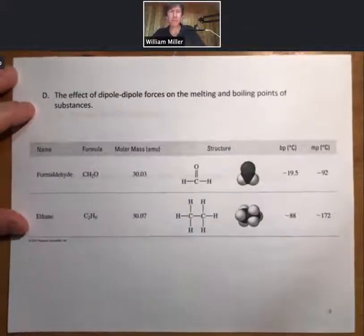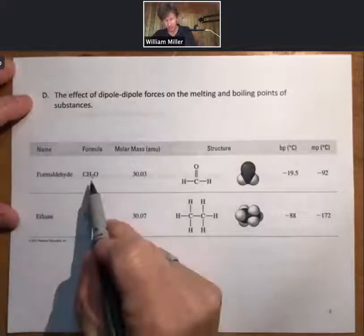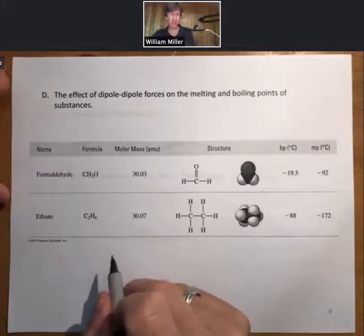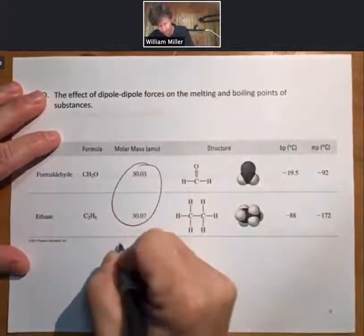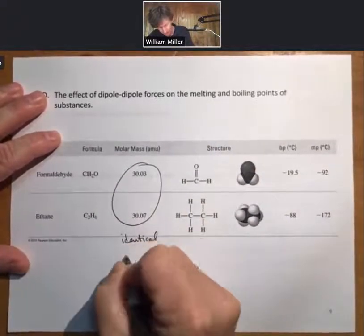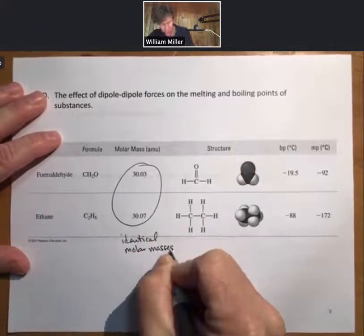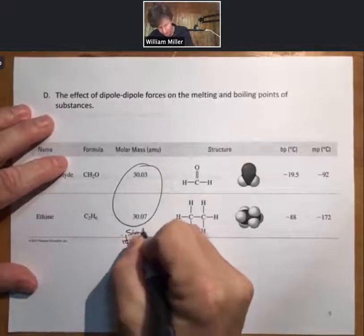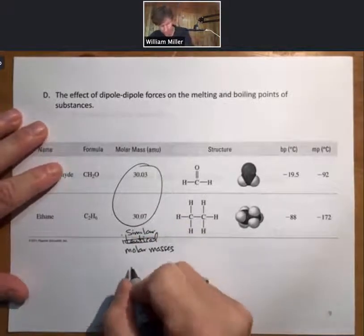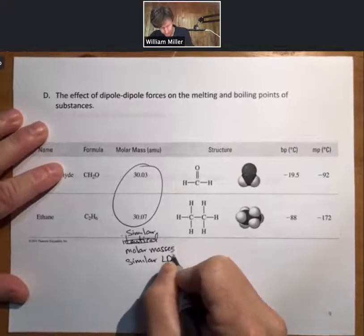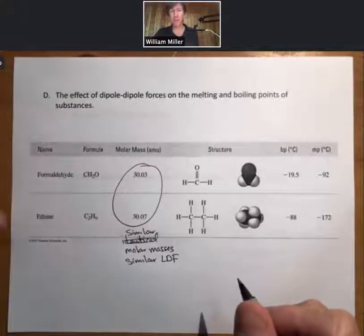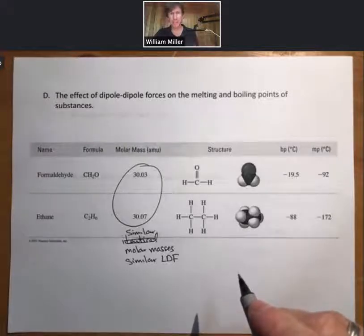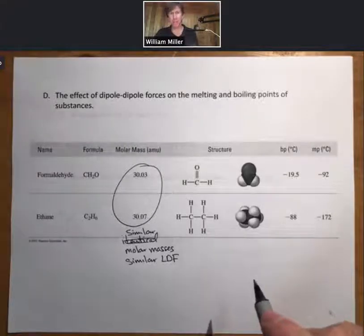Now let's look at the effect of dipole-dipole forces on melting and boiling points. We have two substances here with almost identical molar masses — similar molar masses means similar London dispersion forces. So when we see differences in boiling and melting points between these two molecules, it's not due to LDF. We're picking out an example where dipole-dipole forces are important.